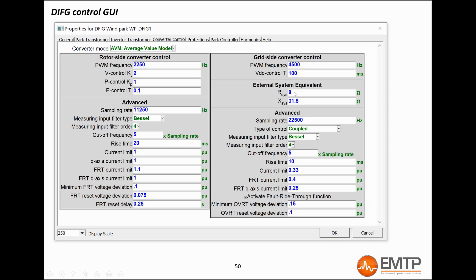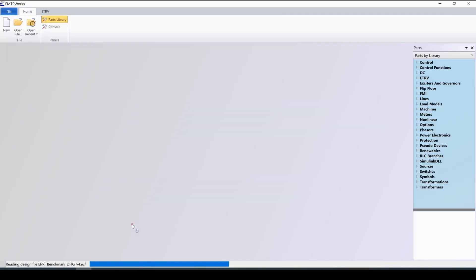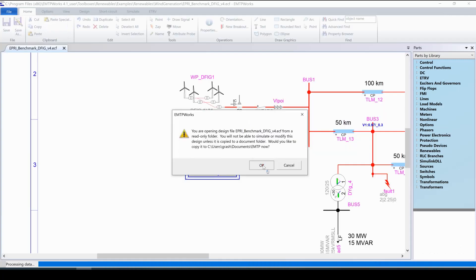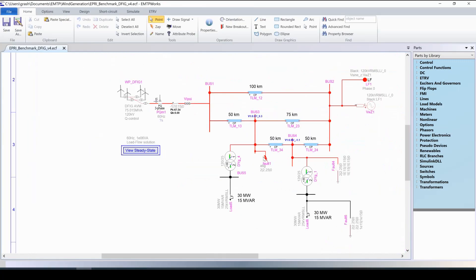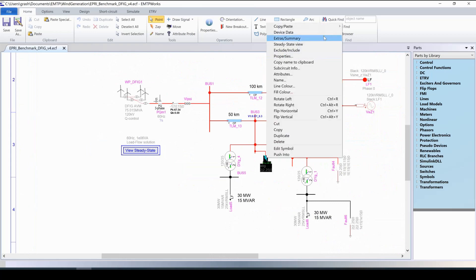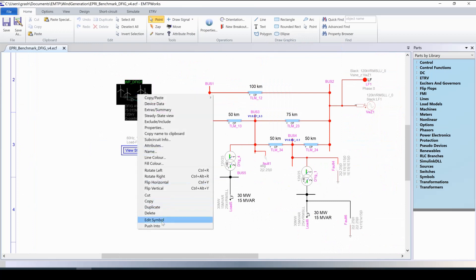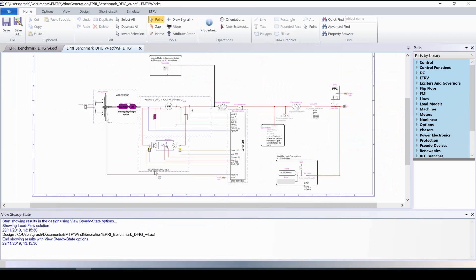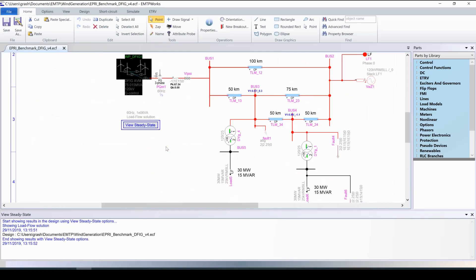Let's now quickly demonstrate the model in EMTP. For the demonstration, I will use the example from the default EMTP library. In this example, a DFIG windpark is connected to a small transmission system. Several fault scenarios are set up. Let's exclude all of them for now. If we go inside the model, the park sub-circuit can be visualized. I recall that this is an aggregated version. It has been described in the first videos of this series. The control functions are all gathered inside this block.